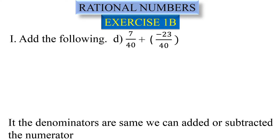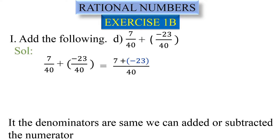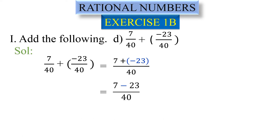Since the denominators are the same, we operate on the numerators directly. Plus into minus gives minus, so: 7 minus 23 divided by 40. Subtracting: 7 minus 23, the difference sign applies, giving minus 16 divided by 40.